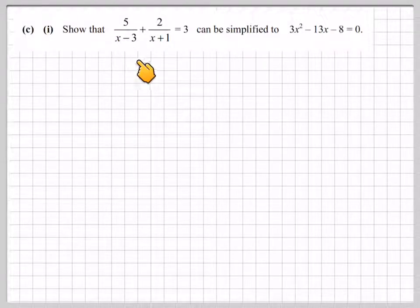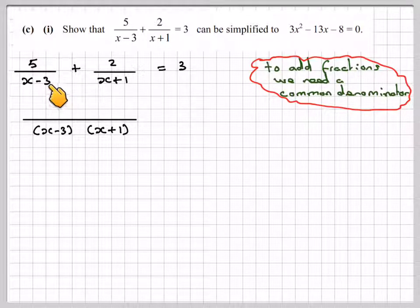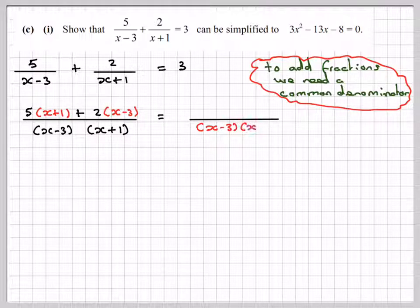Show that 5/(x - 3) + 2/(x + 1) = 3 can be simplified to 3x² - 13x - 8 = 0. This is perhaps the most difficult part of this question. Now we know to add fractions together, we need what's known as a common denominator. So the common denominator will be (x - 3)(x + 1). And because I've multiplied this by x + 1, I must multiply the 5 by x + 1. So we've got 5(x + 1). And because I've multiplied the bottom here by x - 3, then I must multiply the 2 by x - 3. Now I can also put this over the same common denominator by multiplying it by (x - 3)(x + 1). You can see that all cancels out and gives me back to 3. Now the reason for doing that, once we've got a common denominator, we can now ignore it.